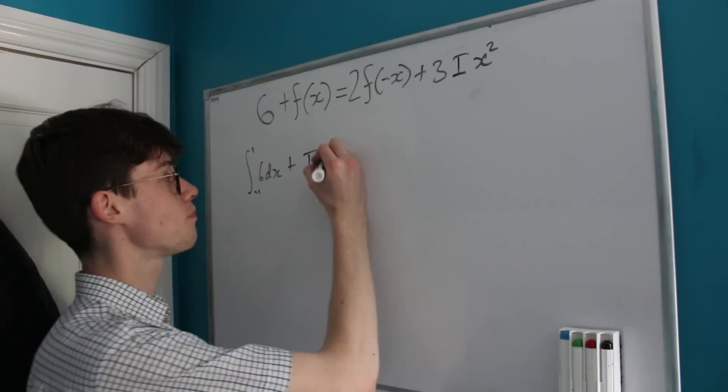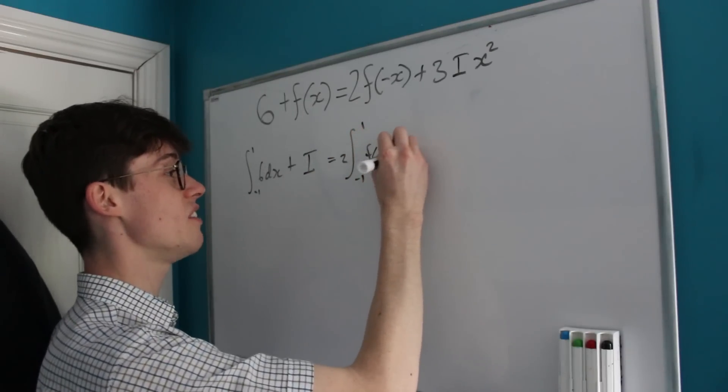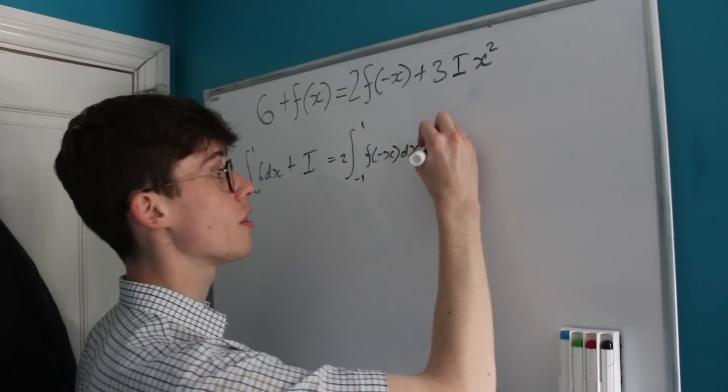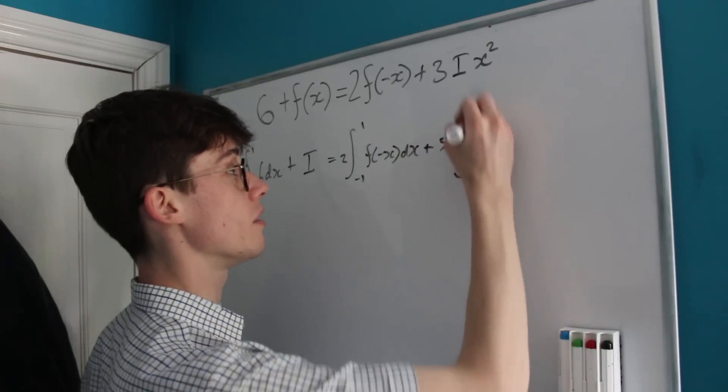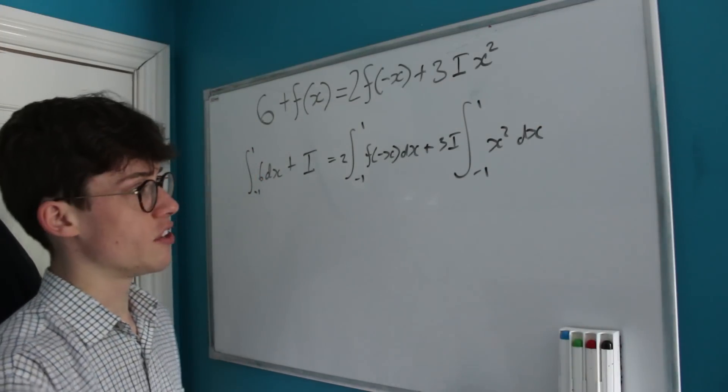That's equal to 2 times the integral from -1 to 1 of f(-x), plus 3I times the integral from -1 to 1 of x² with respect to x.